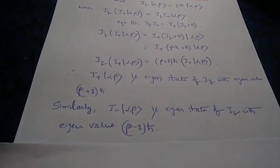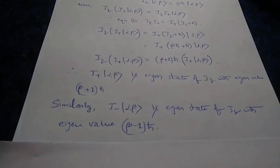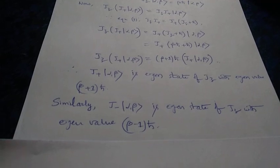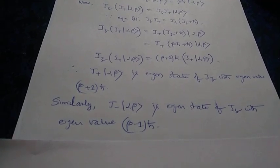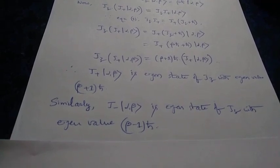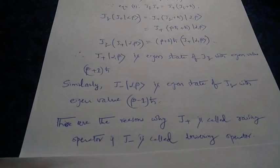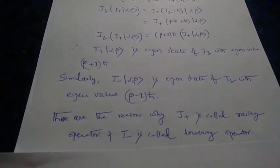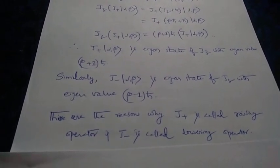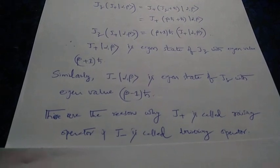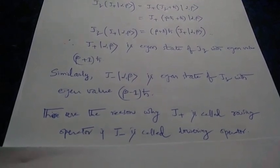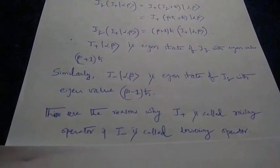Similarly, J−|α, β⟩ is an eigenket of Jz with eigenvalue (β − 1)*h-bar, which is why J− is called the lowering operator. So J+ is the raising operator and J− is the lowering operator.